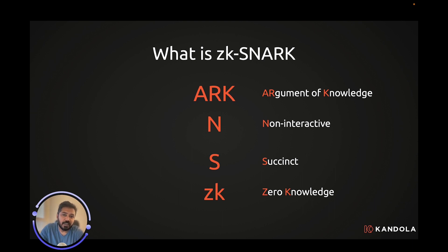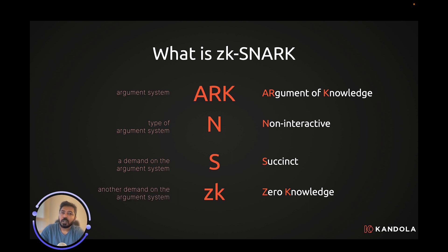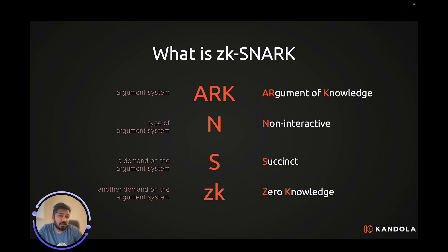The reason for going right-to-left is that ZK-SNARK, or SNARK or STARK, are essentially argument systems. Non-interactive or interactive is just a type of argument system. Succinct — meaning short or quick — is simply a constraint on the argument system. And zero knowledge is yet another constraint. So ZK-SNARK is a specific type of argument system: non-interactive, with two demands — that it is succinct, which we'll get to in a moment...